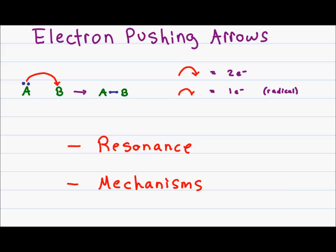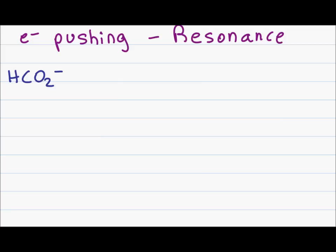So if you understand how and why electrons react the way they do, these mechanisms will become very simple, very obvious, and a lot of fun to figure out. Let's use the carboxylate anion as an example. I will start by drawing one of the resonance structures and taking a quick formal charge.